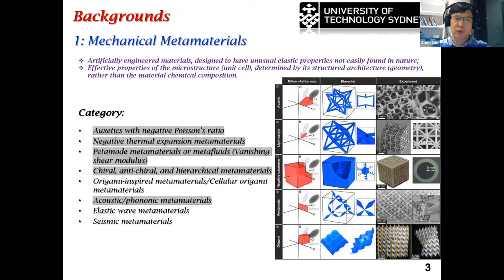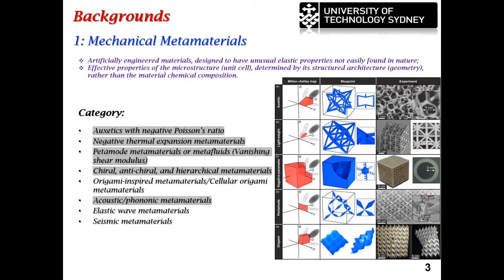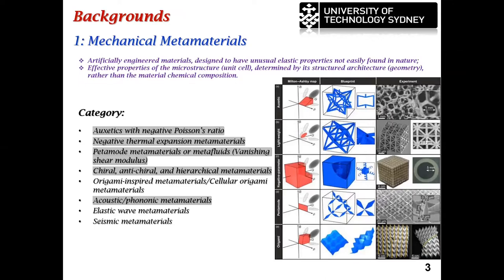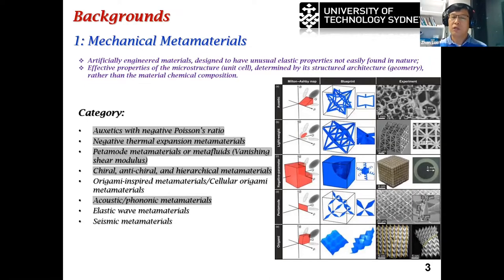The mainstream mechanical metamaterials include auxetics with negative Poisson's ratio, negative thermal expansion metamaterials, pentamode metamaterials with vanishing shear modulus, hierarchical metamaterials, and bioinspired metamaterials. Also acoustic, fluidic, and seismic elastic wave metamaterials. Looking at the figures on the side, these are some benchmark designs and macro architectures for these kinds of mechanical metamaterials.